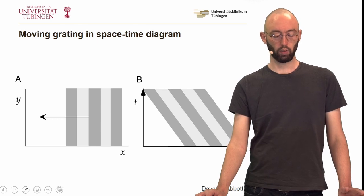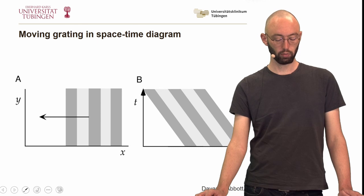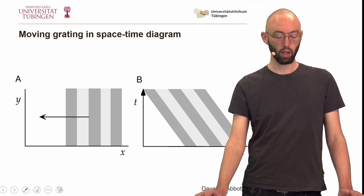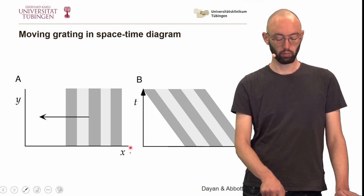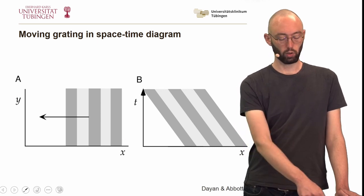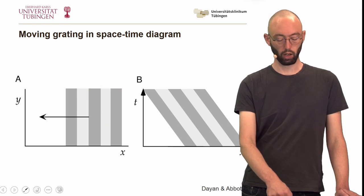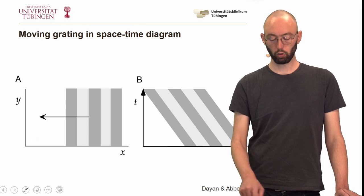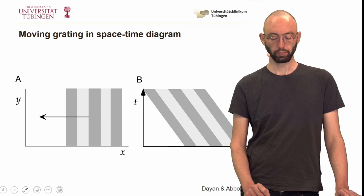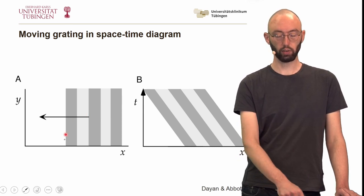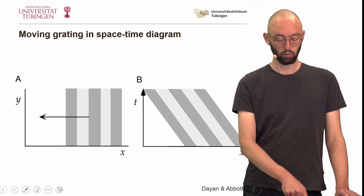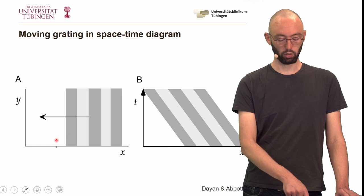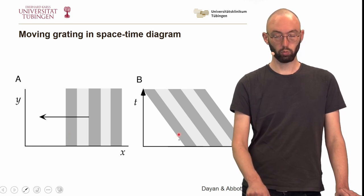How do we look at the direction selectivity or orientation selectivity of such a receptive field? For that we need to show a moving grating in a space-time diagram. Here we have the spatial representation where x and y are spatial coordinates, and we move this grating over time towards smaller x. If we just plot x and t over time, this movement parallel to the x-axis will look like diagonal stripes. For a certain point x, a little bit after the movement starts, the gray bar will appear — corresponding to movement in this direction.